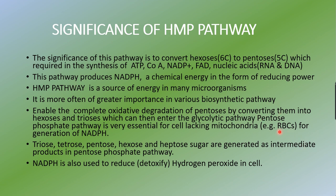The pentose phosphate pathway is especially essential for cells lacking mitochondria — for example, red blood cells (RBCs) — for generation of NADPH. In this pathway, intermediate products are generated including trioses (3-carbon), 4-carbon, 5-carbon, 6-carbon compounds, and even a 7-carbon compound (sedoheptulose). NADPH (reducing power) is also used to reduce hydrogen peroxide in the cell, which is toxic. These are the key significances of the hexose monophosphate pathway.